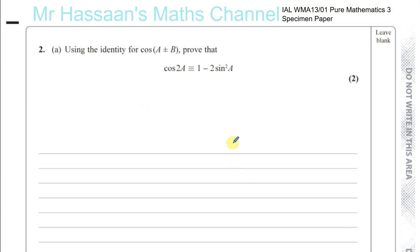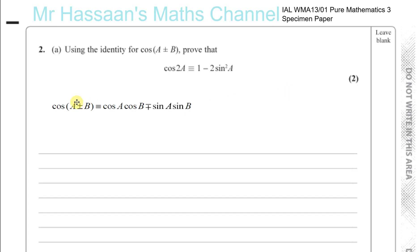Question number two from the P3 specimen paper for the international A level. It's using the identity for cosine A plus or minus B: prove that cosine 2A is identical to 1 minus 2 sine squared A. We need to use the identity for this, which you should know, but in case you don't, it's on the formula sheet — and this is what you see on the formula sheet.